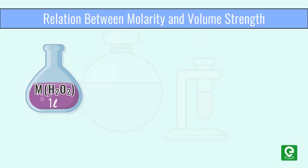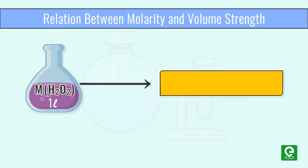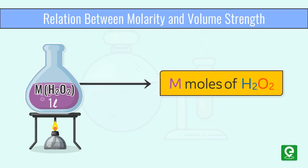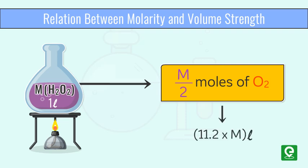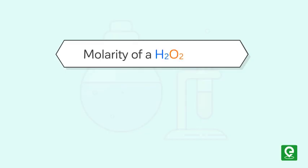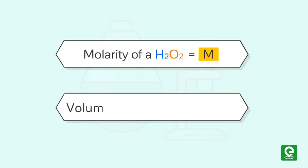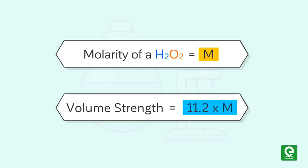Relation between molarity and volume strength: if the molarity of a H₂O₂ solution is M, this means that 1 liter of this solution will have M moles of H₂O₂ in it, and 1 liter of this solution on decomposition will give M/2 moles of O₂. M/2 moles of O₂ will occupy 11.2 × M liters of volume. Therefore, if molarity of a H₂O₂ solution is M, then volume strength = 11.2 × M.